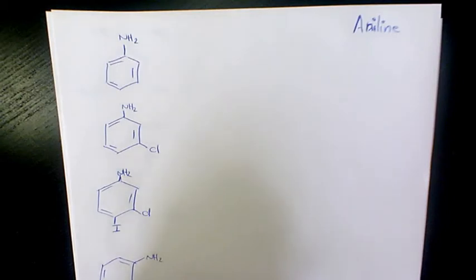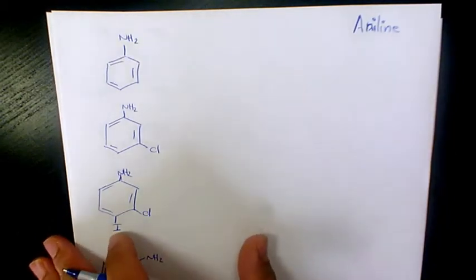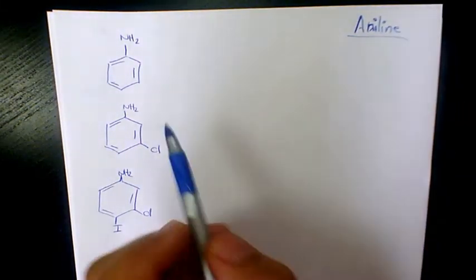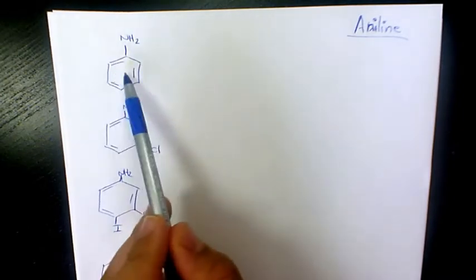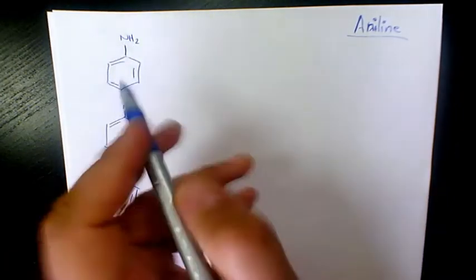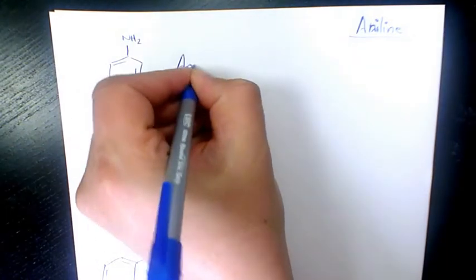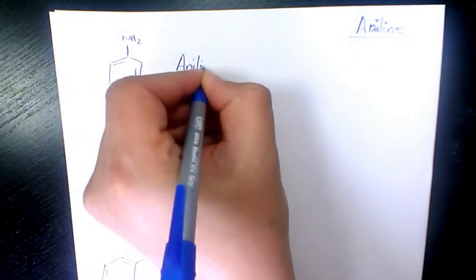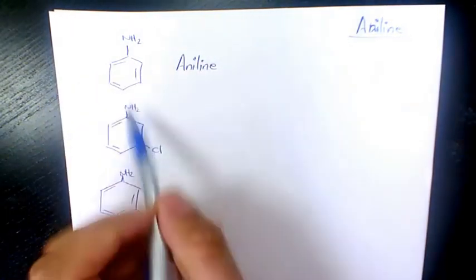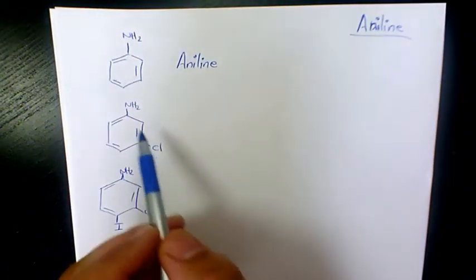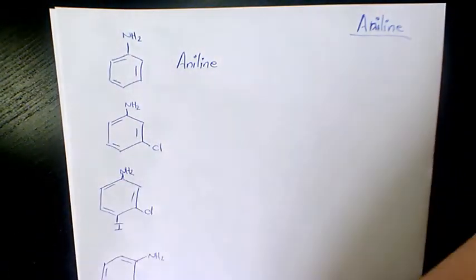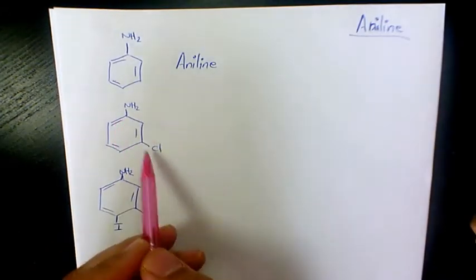What's up guys, this is Massey, welcome to another video. In this video I want to talk about anilines and how to name the aniline family. Anilines are an aromatic group connected to an amino group. The benzene group is connected to the amino group — that's aniline.